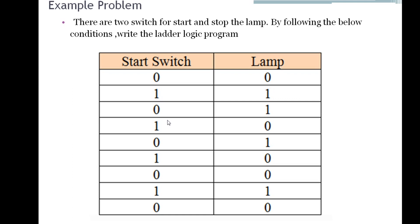For the first condition there is no need for a memory because 0-0 is the normal state before starting the program. Starting from the second condition, we count: 1, 2, 3, 4, 5, 6, 7, 8 — so we need 8 memories. Each memory stores the corresponding state. For example, M0 stores the state of the start switch being on, and M1 stores the off state of the start switch.